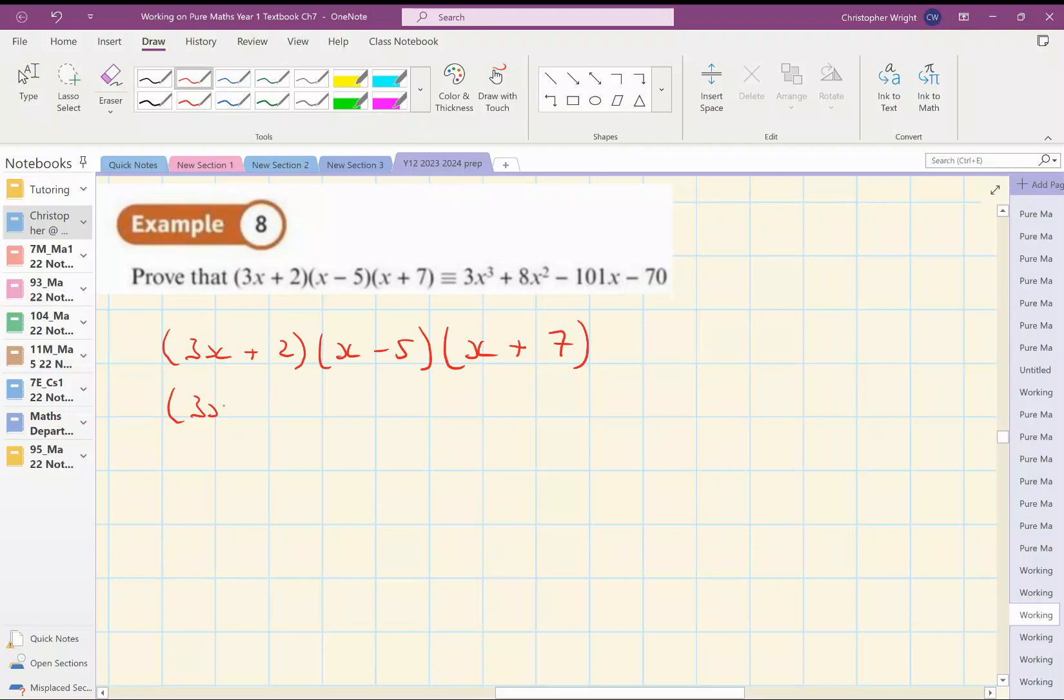I'm going to start. I'm copying down the first of these and just expand these second two brackets. That's going to be x squared plus 2x minus 35.